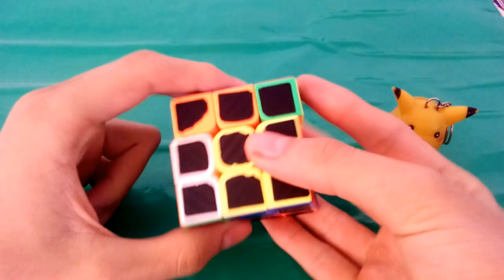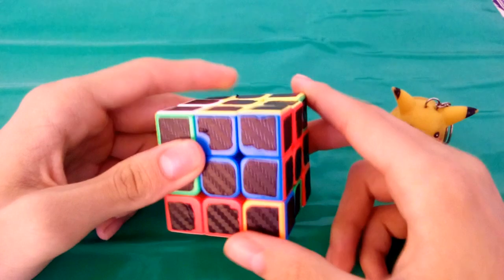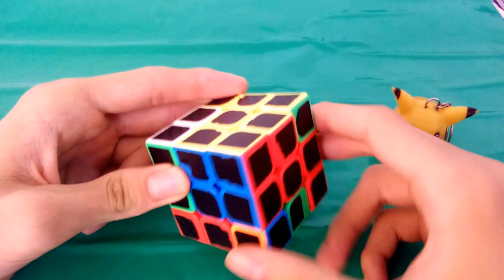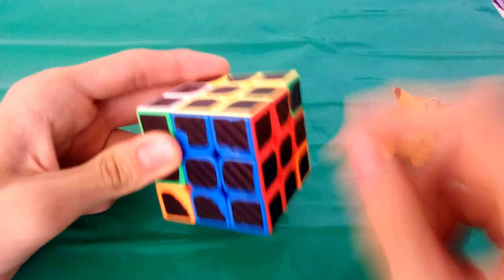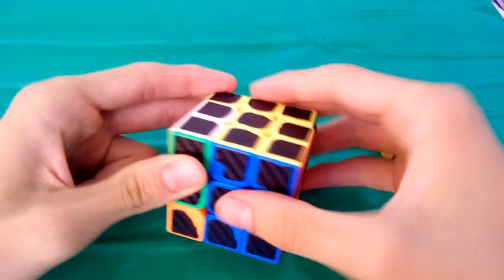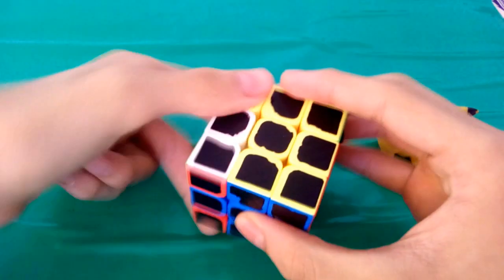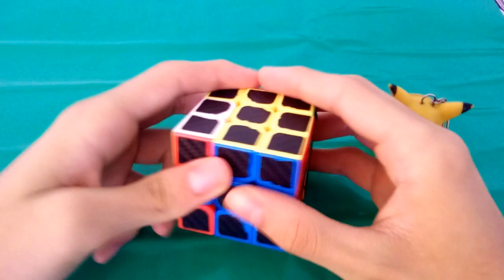You repeat the double move on the back layer like that. You return this move and do a double move on the left side.